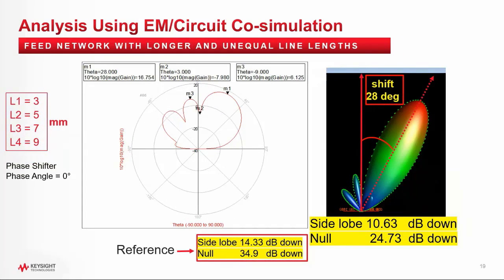On the next page, I used longer lines of different lengths — 3, 5, 7, and 9 millimeters. These longer lines have shifted my beam by 28 degrees further. The side lobes and nulls have degraded as well. So you can see that if you are building a prototype 5G system in the lab and your output connections to the antenna are different in lengths, you will get this terrible beam profile. There will be a lot of work to calibrate the whole system, so you must be careful about the feed network line lengths during the development phase.